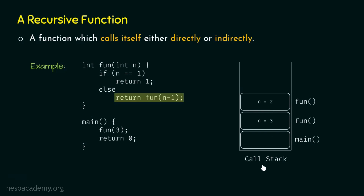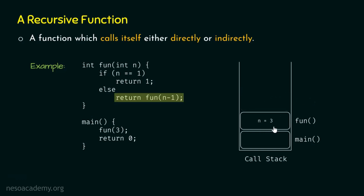We can observe how the call stack helps us remember where we left off and what the current function under execution is. After removing the activation record of fun(n=1), we land at fun(n=2). fun(n-1) has received 1, so the statement becomes return 1. According to the call stack, we must return 1 to fun(n=3), because after removing the fun(n=2) activation record, fun(n=3) will be the top of the stack. This is how the call stack manages multiple function calls.